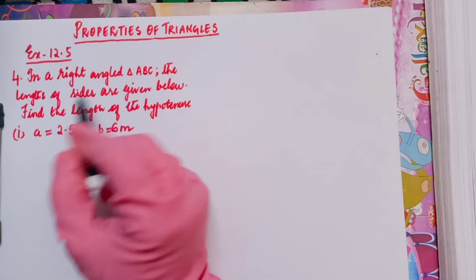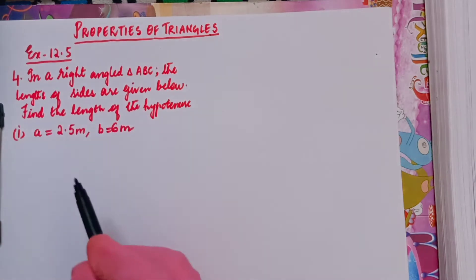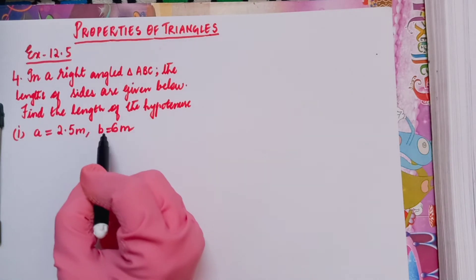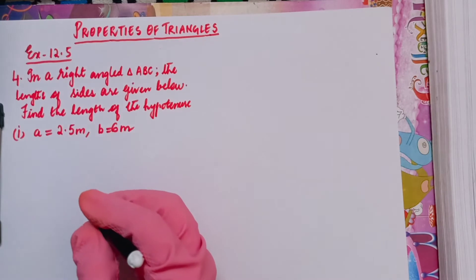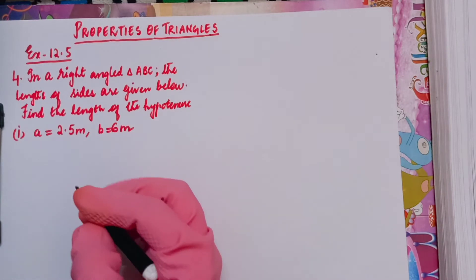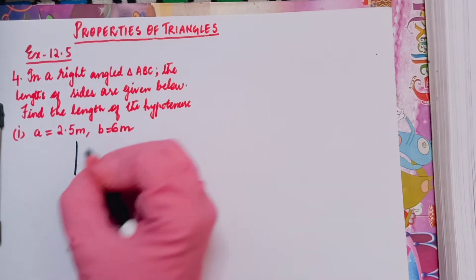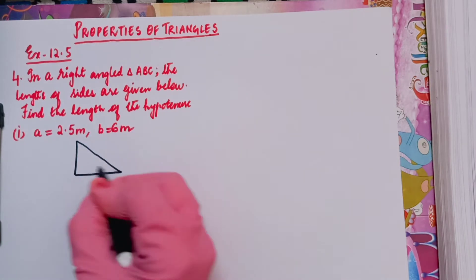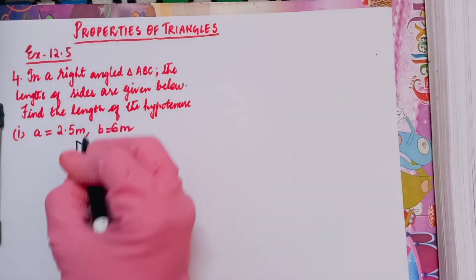In a right angle triangle ABC, the lengths of the sides are given and you need to find the length of the hypotenuse. The first side a equals 2.5 meters and b equals 6 meters. First and foremost, when doing the Pythagoras property, you need to draw a right angle triangle.